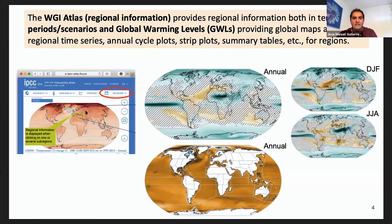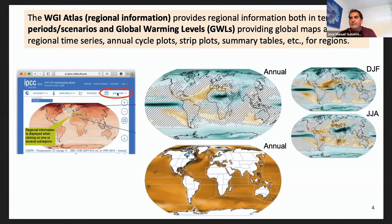The typical information from the Interactive Atlas is in the form of global maps. You can choose the dataset (global or regional), the variable, the period or global warming level, and also the season — so you can customize the season of interest for your region. You get typical products like warming or precipitation maps. This is the annual case, but you can get winter, summer, or any other season. You can also get sea level rise maps. All these kinds of maps can be produced and customized with the Interactive Atlas.